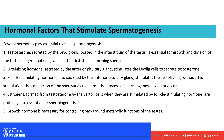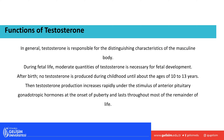Estrogen is formed from testosterone by the Sertoli cells when stimulated by FSH, and it is suspected to play a role in spermiogenesis. Growth hormone is also needed for controlling the metabolic function of the testis. Most of these hormones originate from the anterior pituitary, once called the master gland.